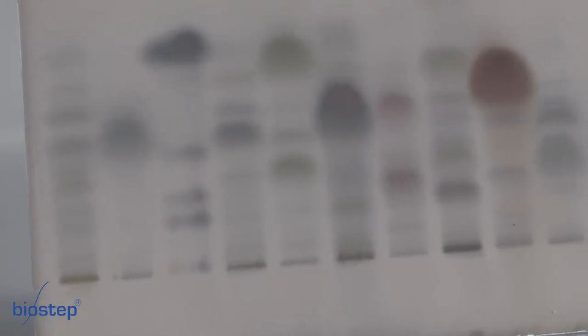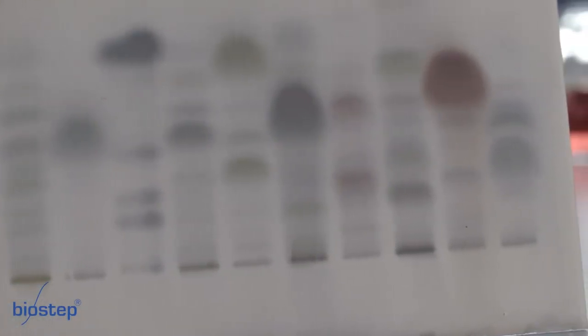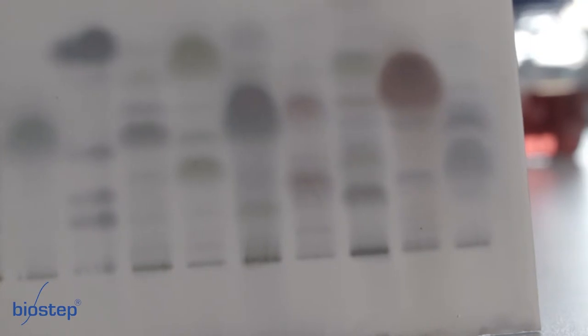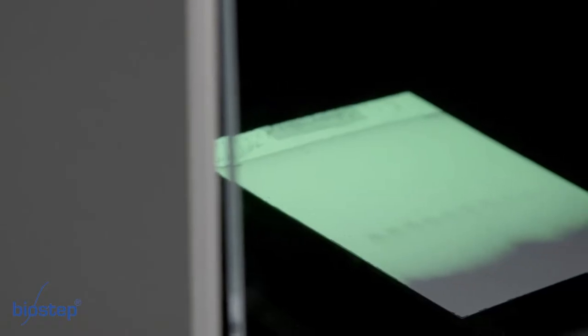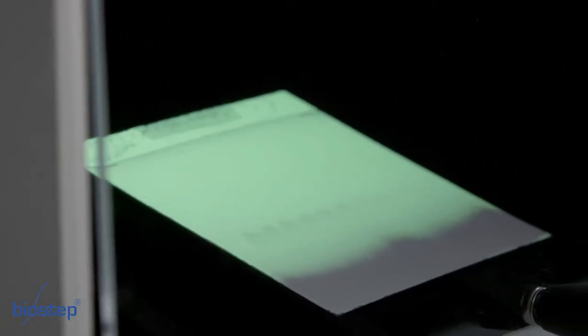You see a cellulose plate with a separation of a mixture of flavonoids and caffeic acid. At 254 nanometres, the fluorescence indicator of the cellulose plate fluoresces green and the substances show quenching.